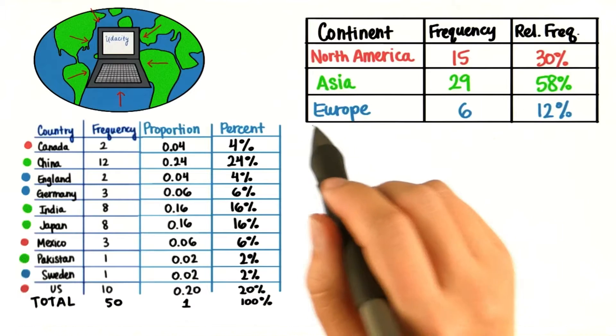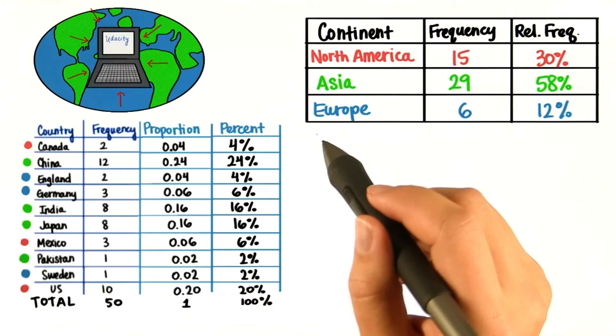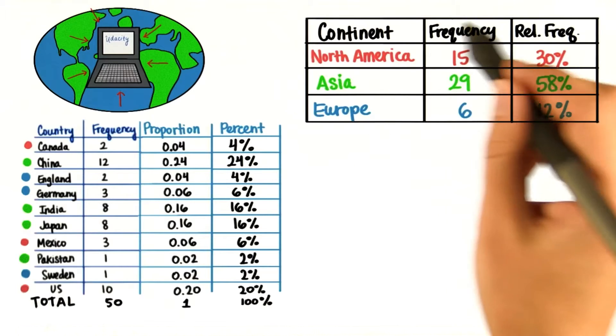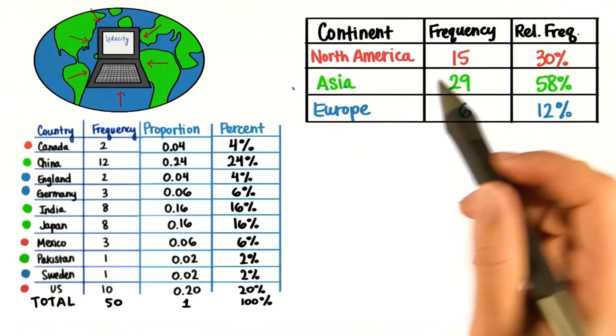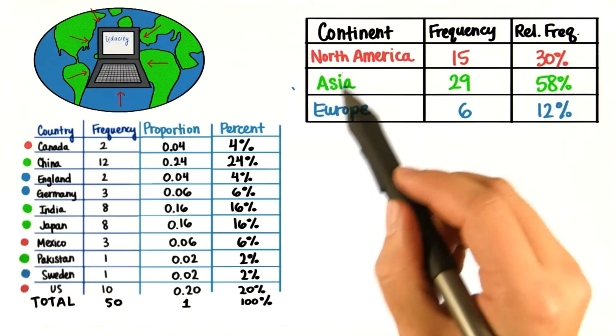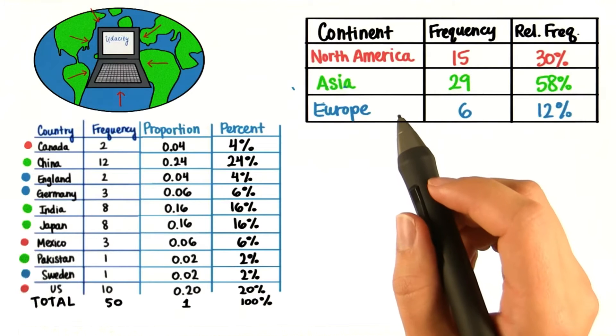While this is interesting and provides new information, now we can't know how many people are from individual countries just by looking at this table. Creating this table was convenient because it gave us fewer categories to look at—three categories in this case—but we lost information in the process.